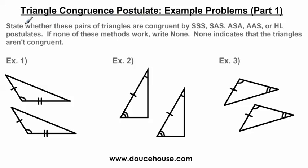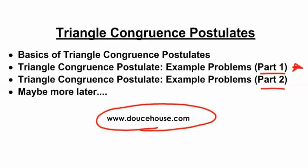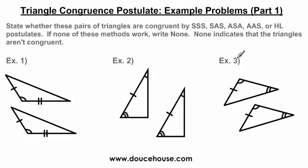This question starts off with: state whether these pairs of triangles are congruent by side-side-side, angle-side-angle, angle-angle-side, or hypotenuse-leg postulates. If none of these methods work, write none. None indicates that the triangles aren't congruent. If you have no idea what I'm talking about, go back and watch the basics video on my website or look it up on YouTube. Anyways, I'm going to jump into these problems.